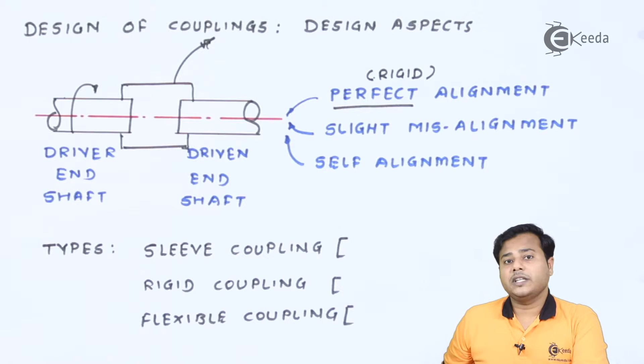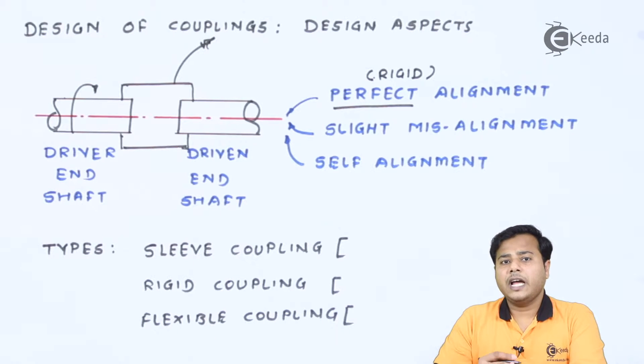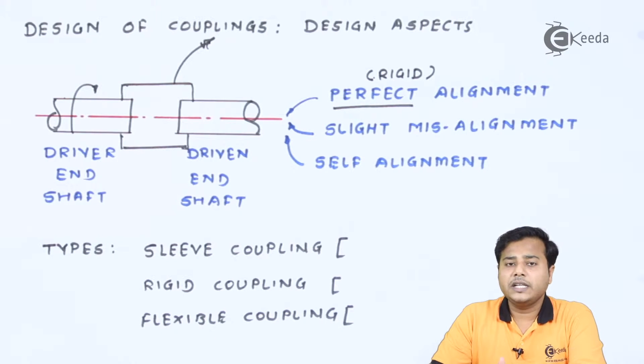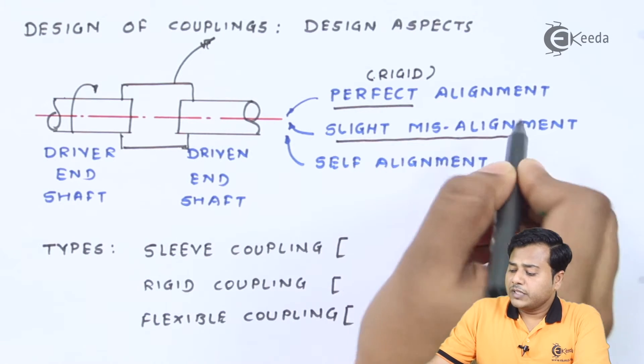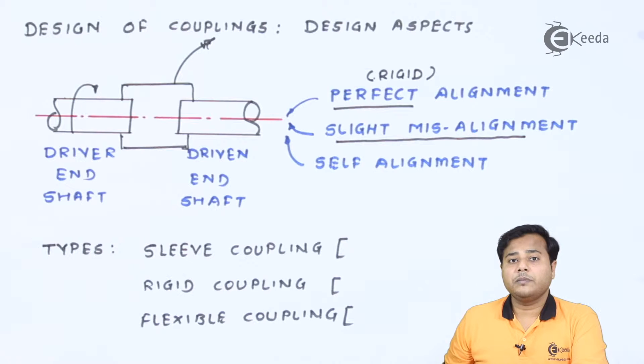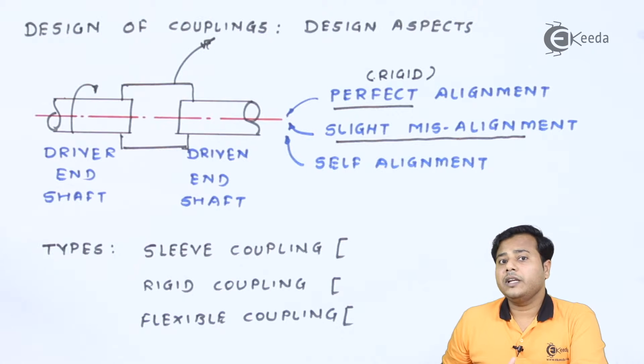The next thing is slight misalignment. Now in some cases that happens or that has to be kept purposely slight misalignment. In such case, we will go for the flexible coupling or we will go for the coupling like Oldham.